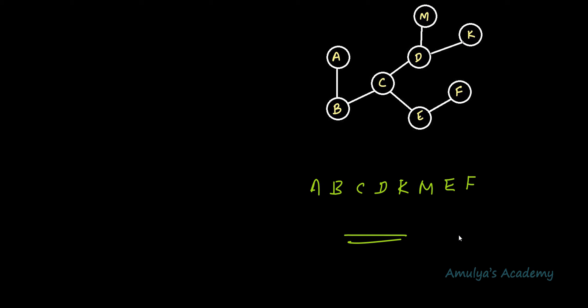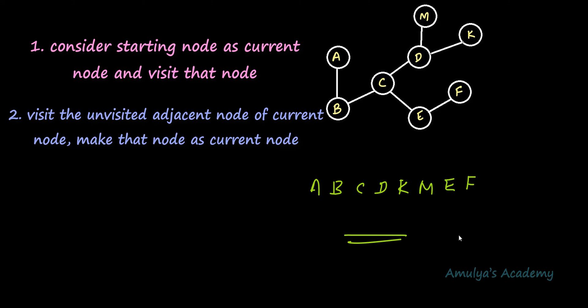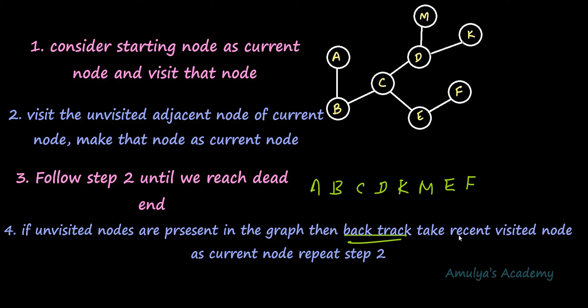Here is a short summary of the DFS algorithm. Step 1: Start the traversal from the starting node, consider it the current node, and print (visit) it. Step 2: Visit one unvisited adjacent node of the current node, make it the current node, and print it. Follow Step 2 until you reach a dead end. Step 3: If unvisited nodes remain, backtrack to the most recent node not completely explored and repeat Step 2. Step 4: If all nodes are visited, stop.